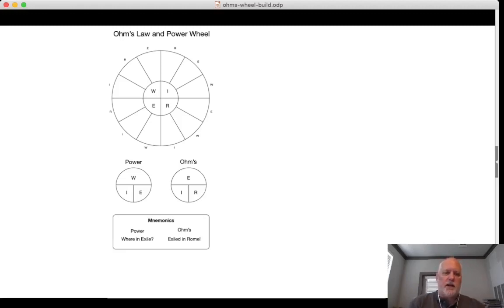The way that I remember the order is through mnemonics. There are many out there, use whichever ones work for you. But for me it says 'Where In Exile Is Power' and 'Exile In Rome Is Ohm's'. And the first word goes on top and the other two go underneath.